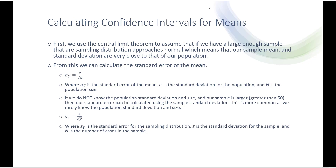In general, however, we do not know the population standard deviation. And as long as our sample is larger — greater than 50 or so — then our standard error can be calculated using the sample standard deviation. This is much more common, and so the standard error of Y equals the standard deviation of our sample divided by the square root of the size of our sample.